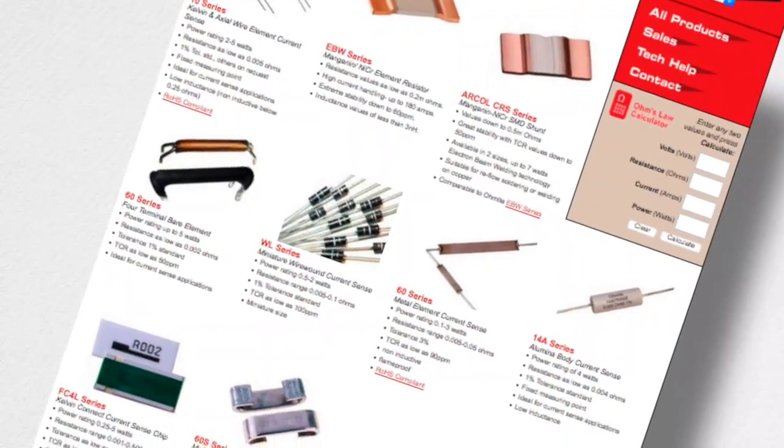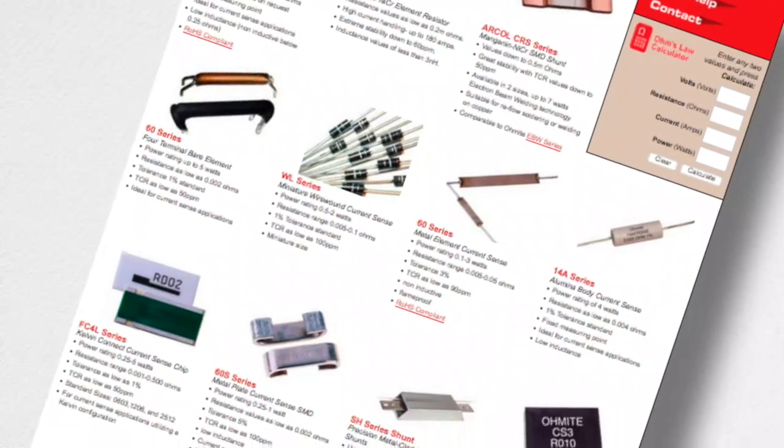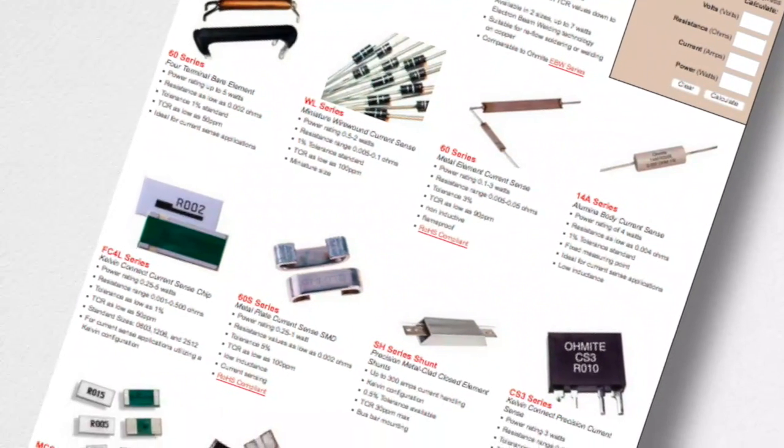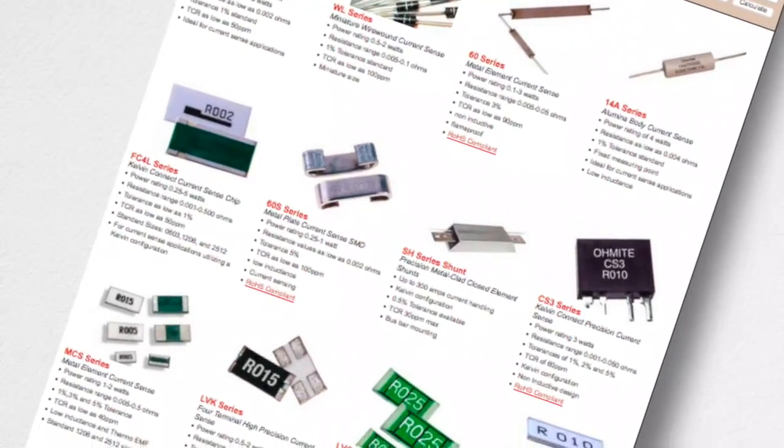Ohmite's current sense resistors provide a simple and economic solution for applications where short-circuiting is a concern and extending battery life is key.